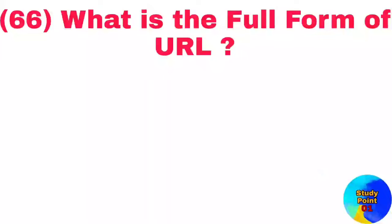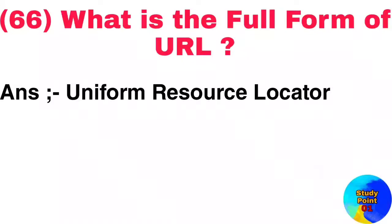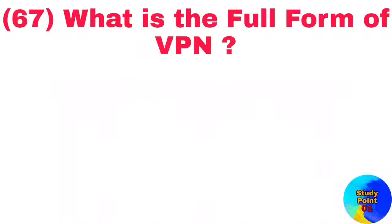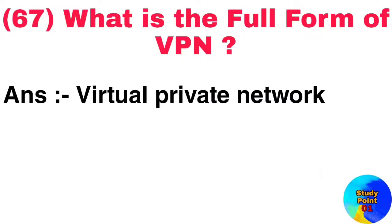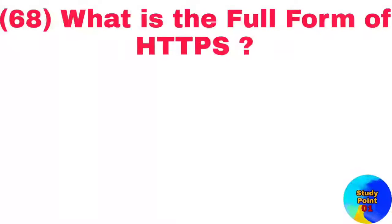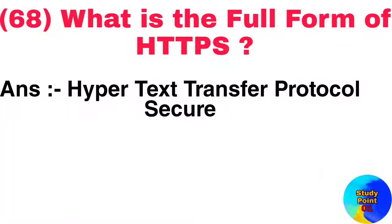Question number 66: What is the full form of URL? Answer: Uniform resource locator. Question number 67: What is the full form of VPN? Answer: Virtual private network. Question number 68: What is the full form of HTTPS? Answer: Hypertext transfer protocol secure.